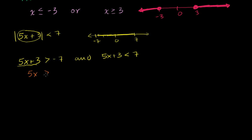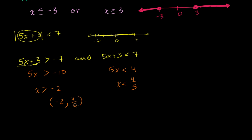Subtracting 3 from both sides: 5x is greater than negative 10. Divide both sides by 5: x is greater than negative 2. Over on the other side, subtract 3 from both sides: 5x is less than 4. Divide both sides by 5: x is less than 4/5. So the solution set — we have to be greater than negative 2, not greater than or equal to, and less than 4/5. In interval notation, all of the x's between negative 2 and 4/5. Or: x is greater than negative 2 and less than 4/5.